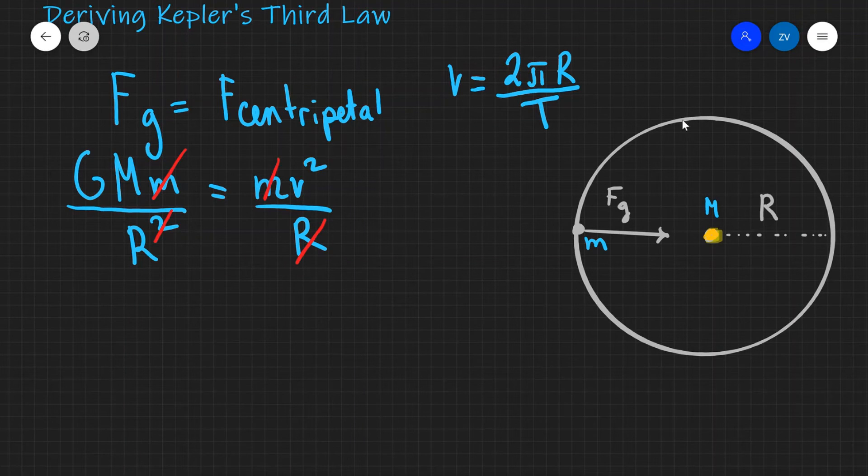Okay well I can actually let's square that as well because we can see that in our equation this is squared. So what I'm going to do is say that v squared is going to equal 4π squared r squared divided by t squared. Perfect.